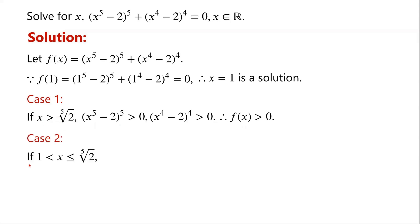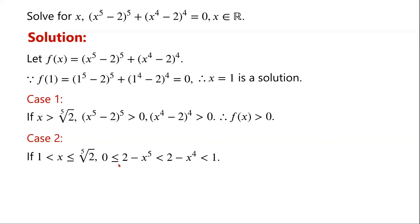Case 2: if x is greater than 0 and less than or equal to the fifth root of 2, then x to the power of 5 is less than or equal to 2, so 2 minus x to the power of 5 is greater than or equal to 0.